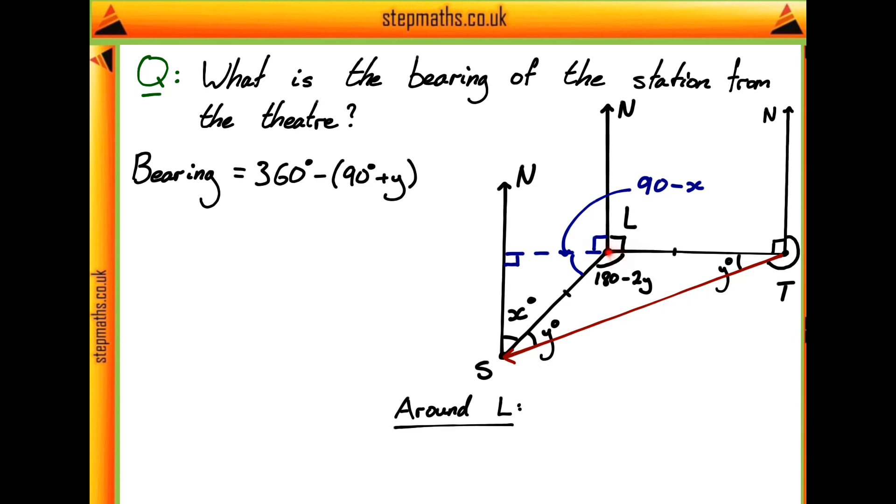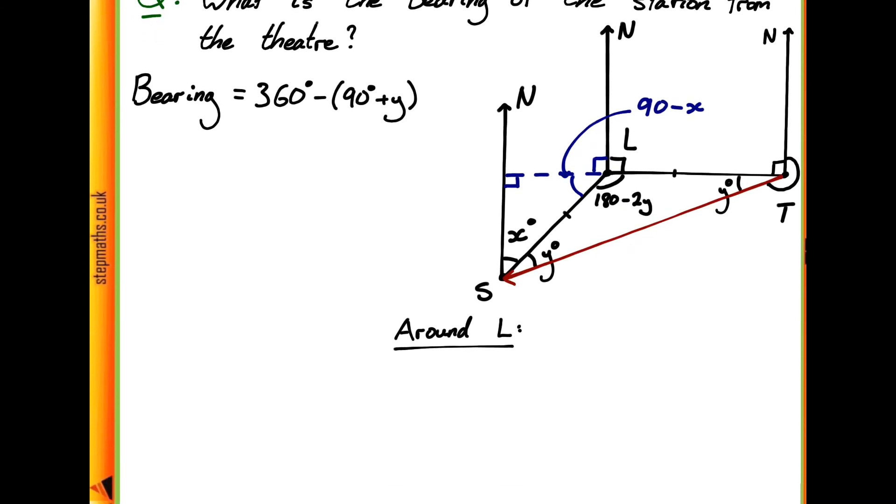So looking around l, we can use exactly the same factors we did around t, that all of the angles add up to 360 degrees together. So we can have our 90 degrees up here in our diagram plus our 90 minus x angle plus our 180 minus 2y angle plus our extra 90 degrees, and that's all together going to be equal to 360 degrees.